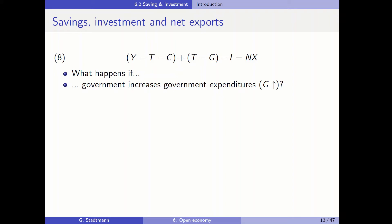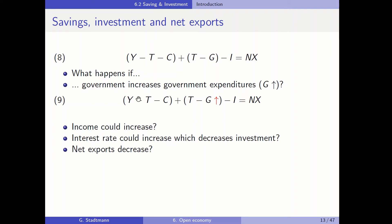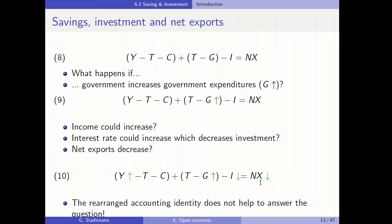You might think you can use this equation to answer: what happens if the government increases government expenditures? When the government increases spending, the left-hand side becomes smaller because there is a negative sign in front of G. But this could lead to an increase in income Y, or the interest rate could increase affecting investment, or net exports could decrease. We don't know which adjustment will take place, so this accounting identity does not help answer this question.